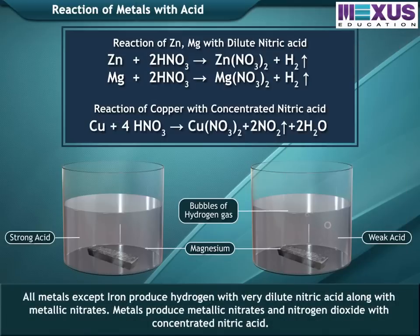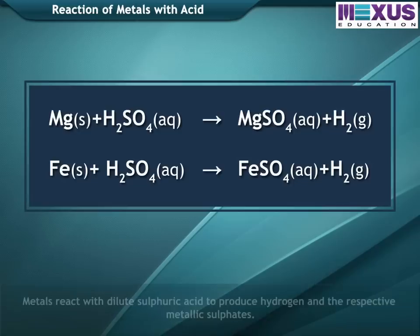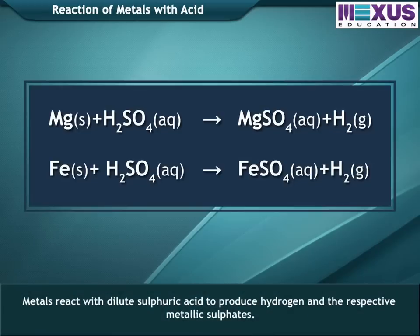All metals except iron produce hydrogen with very dilute nitric acid, along with metallic nitrates. Metals produce metallic nitrates and nitrogen dioxide with concentrated nitric acid. Metals also react with dilute sulfuric acid to produce hydrogen and their respective metallic sulfates.